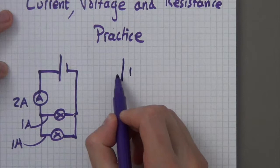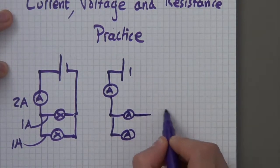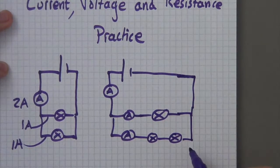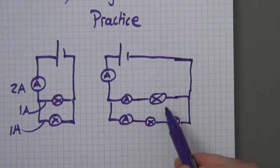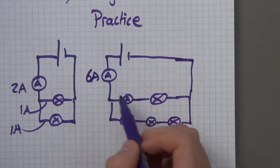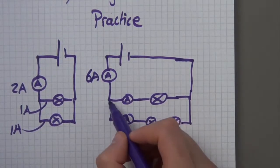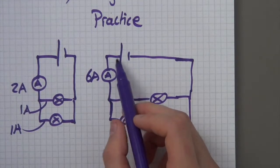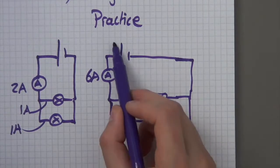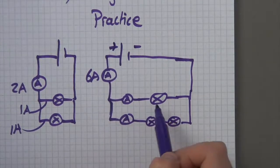Now what if I have the same two ammeters but this time one lamp on the top branch and two lamps on the bottom? Think of lamps as small mountains. Let's say six amps are coming from the battery, passing through this one lamp — that's one mountain — and two lamps on the other branch — that's two mountains. The conventional current, positive charges, travel from the positive end and want to get all the way around to the negative end of the battery. It sees one mountain down this pathway and two mountains down the other.